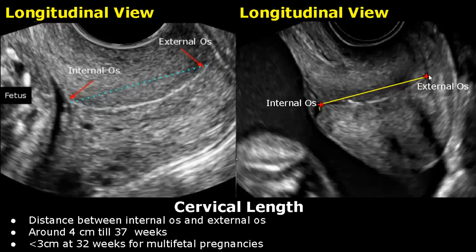The normal cervical length is around 4 cm till 37 weeks gestation. In twin pregnancies, it can be around 3 cm or less at 32 weeks.